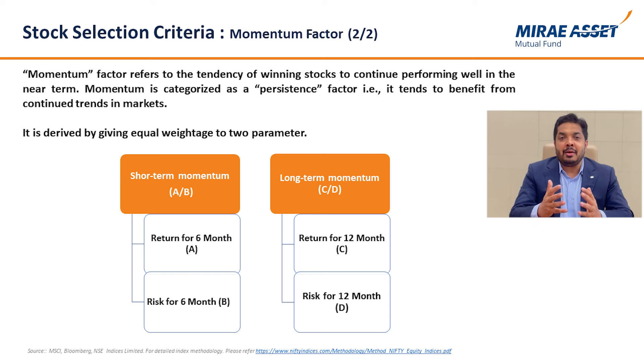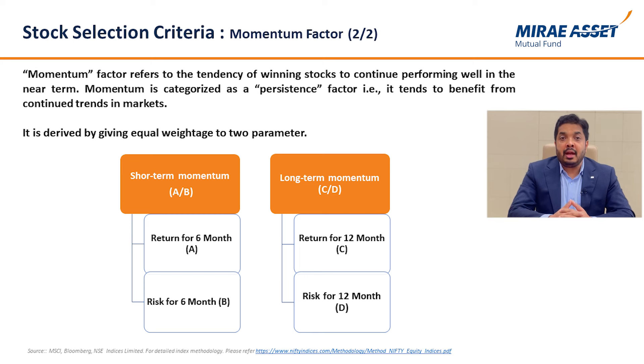Companies that perform well on quality and momentum scores are selected. After identifying these 100 companies, the portfolio is formed. So these 100 companies are selected on the basis of liquidity, quality, and momentum factors.